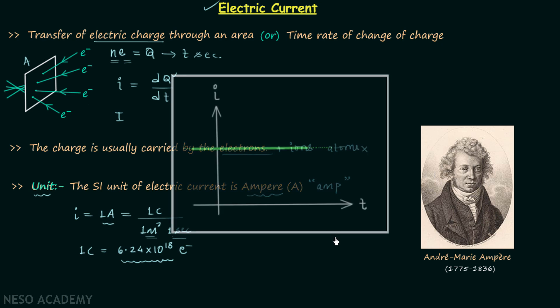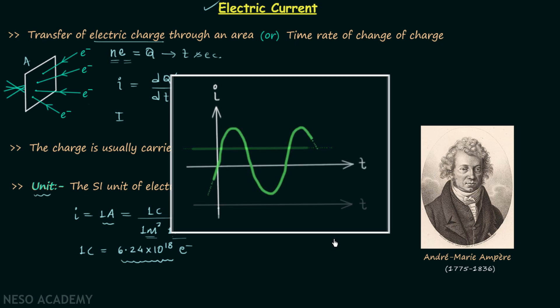The first current is known as direct current because its value does not change with time; it is constant throughout. The second current is known as sinusoidal current or simply alternating current.